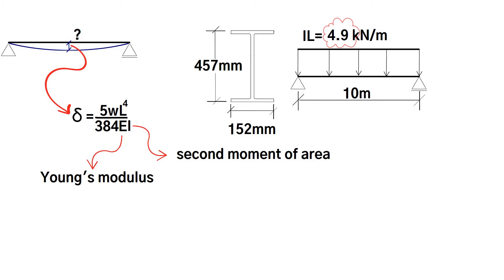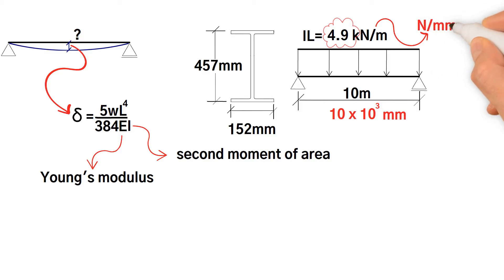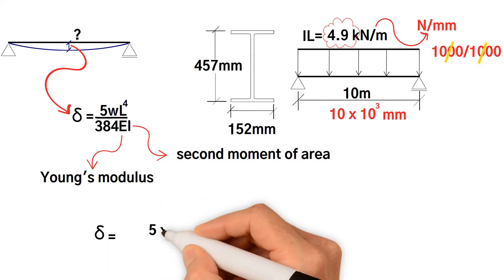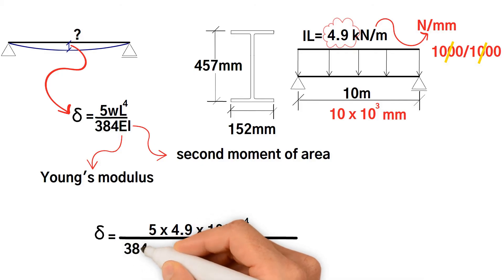What do we have so far? 5 it's a constant multiplied by W. Now we need to be careful with the units here because everything is going to have to be in millimeters. So the span length is 10 times 10 to 3 millimeters. To get the load converted from kilonewtons per meter to newtons per millimeter, we would multiply by a thousand and divide by a thousand so that leaves it the same. 5 by 4.9 by 10,000 to the 4 over 384.